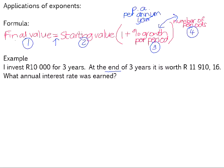So the final value is the value at the end of the investment. In this example, that is 11,910 rand and 16 cents. The starting value is 10,000 rand. The percentage growth per period or the interest, I don't know in this case. That's what they're wanting me to find out. What annual interest rate was earned? And the number of periods, I've had this investment for three years.